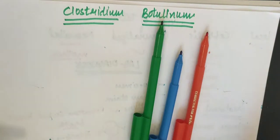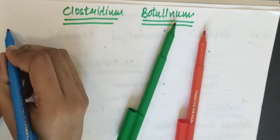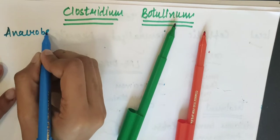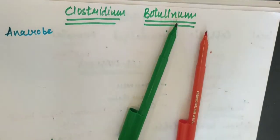So now we'll talk about Clostridium botulinum. The other clostridium is also an anaerobe, an obligate anaerobe, and it's also spores - it's spore forming.